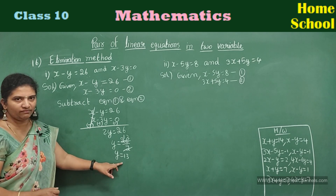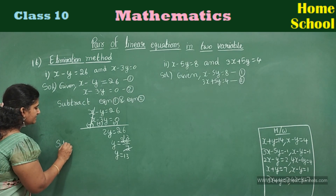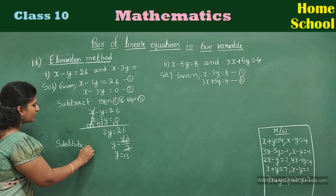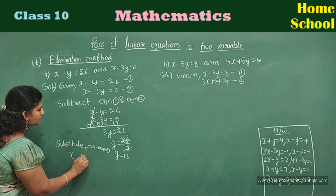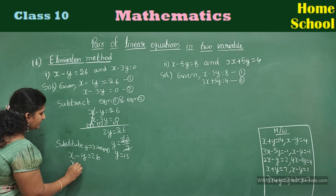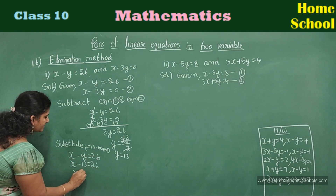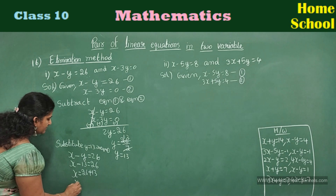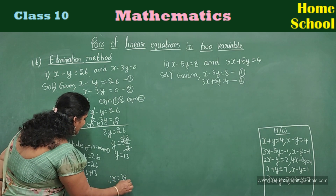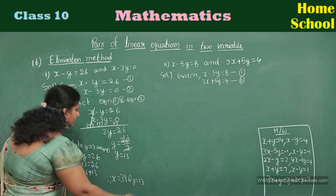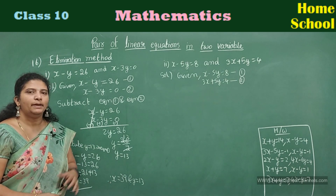X value is eliminated — you got y value. Now substitute y equal to 13 in equation 1: x minus y equal to 26; x minus 13 equal to 26; send 13 to the other side: x is equal to 26 plus 13, so x is equal to 39. Therefore, the solutions of the two equations are x is equal to 39 and y is equal to 13 — the same answer we got before in substitution method. Same answers, but different methods.